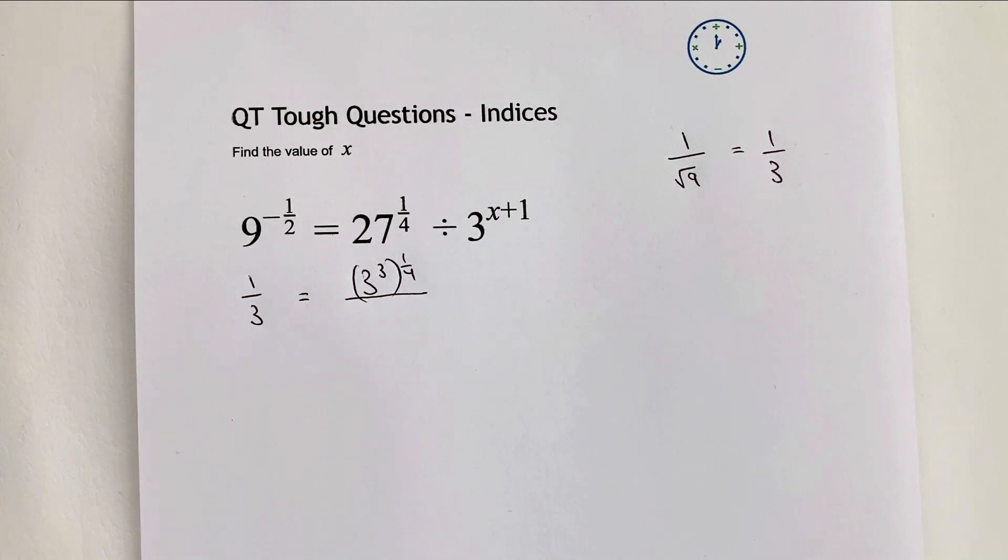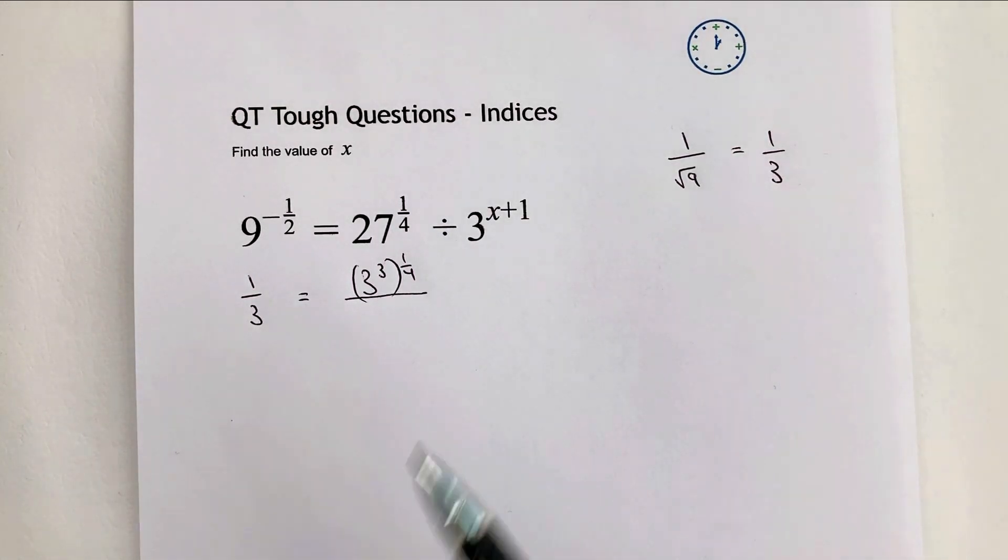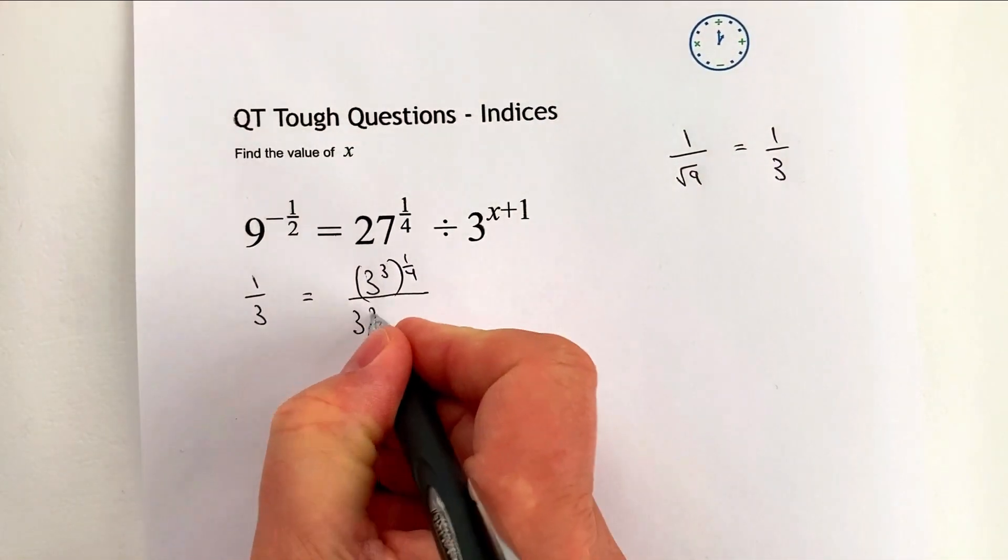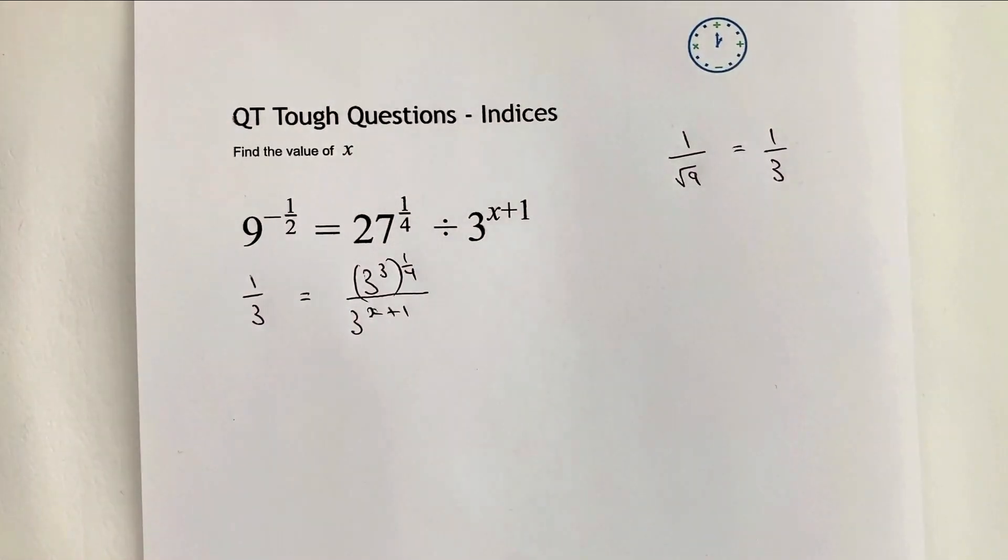Okay, which is actually the fourth root. So the bottom, the denominator here is going to be 3x plus 1. And I'll leave that as 3x plus 1.